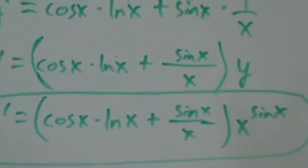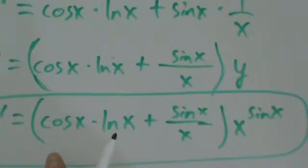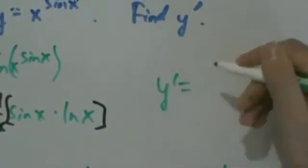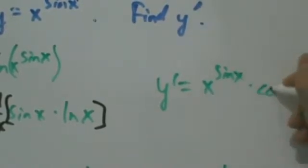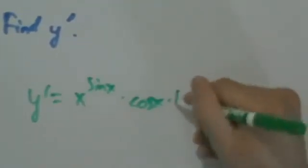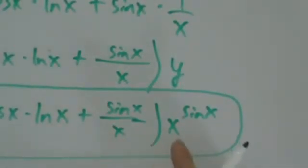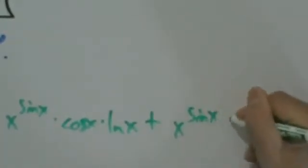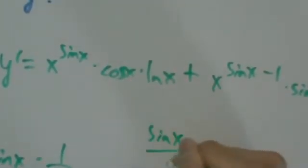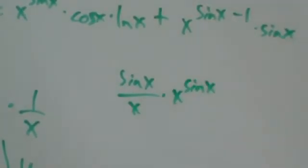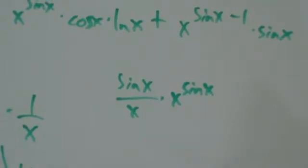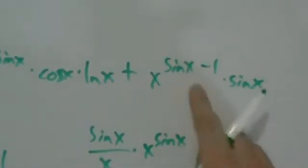Just a quick note: we could distribute x to the sine of x through the answer. We'd get y prime equals x to the sine x times cosine x times natural log of x, plus what we have is sine of x over x times x to the sine of x. That fraction simplifies, and we'd end up with x to the sine x minus 1 times sine of x. If you only care about the logarithmic differentiation part, that's done — you can go to the next video.